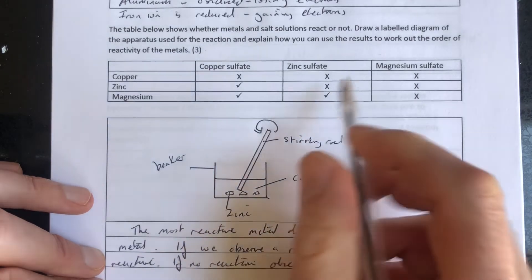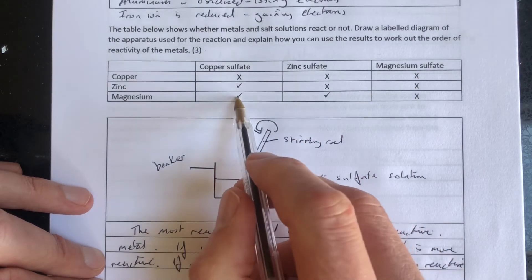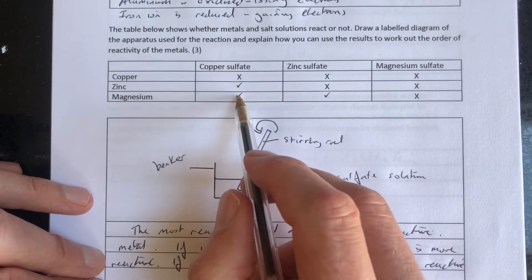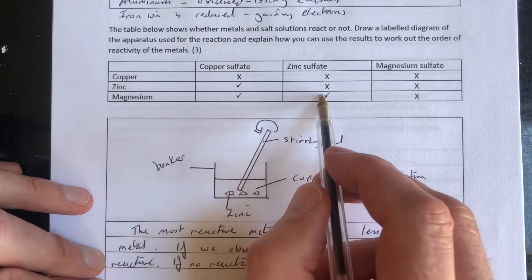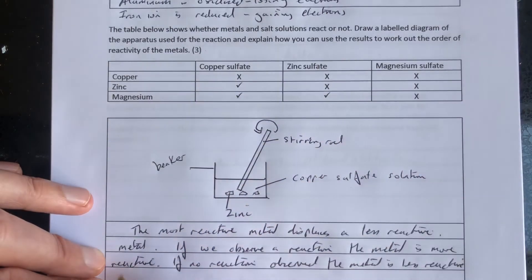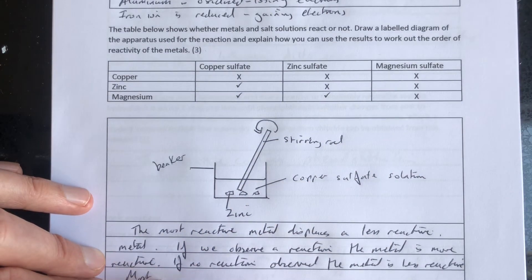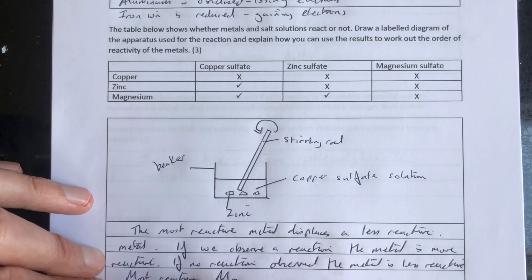So looking at these results here, magnesium reacts with copper sulphate. It reacts with zinc sulphate. Therefore, magnesium is more reactive than copper and more reactive than zinc. So most reactive: magnesium, number one.